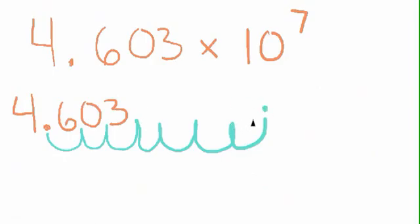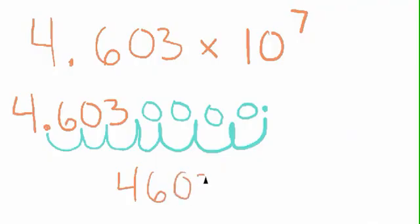Now all these empty pockets I left, I'm going to fill in with zeros. And then I'm just going to write it down here to clean it up a little bit: 4, 6, 0, 3, 0, 0, 0, 0. And you can add your little commas just to make it look good, right there and right there.